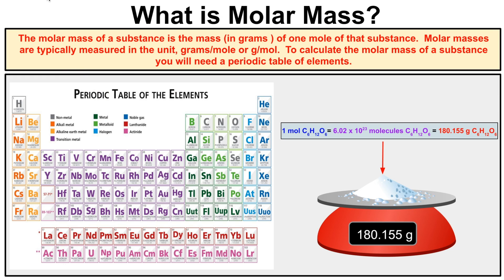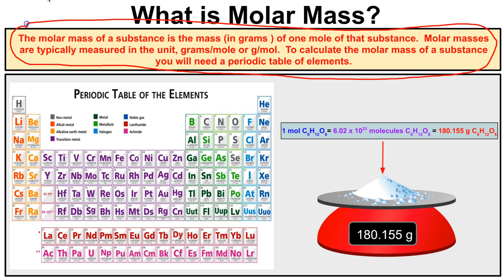Here's how it works. The molar mass of a substance is the mass in grams of one mole of that substance, and molar masses are typically measured in the units grams per mole, abbreviated g/mol. To calculate the molar mass of a substance it's easy — you will need a periodic table of elements, so whenever you're asked to calculate the molar mass go ahead and bring out your periodic table.